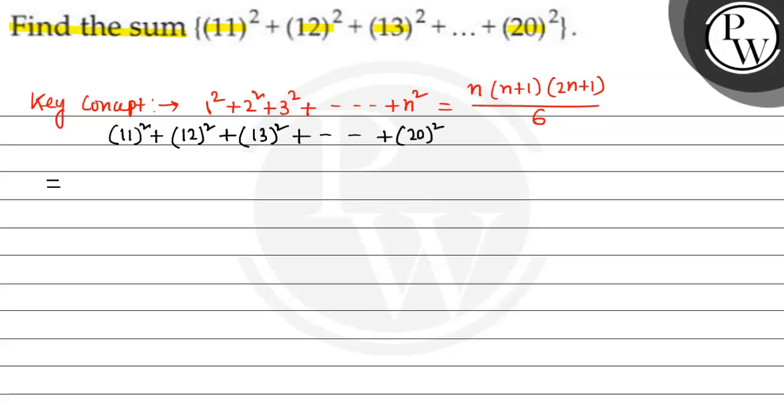So, what do we need to do? We need to calculate 1 square plus 2 square plus 3 square plus dot dot up to 20 square minus 1 square plus 2 square plus dot dot up to 10 square.